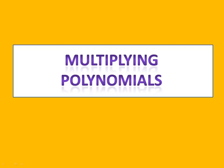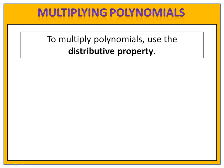So you want to multiply a couple of polynomials but you're not sure where to start. The good news is you really know everything you need to in order to do this. All you're going to do is use the distributive property. Let's look at our first exercise.